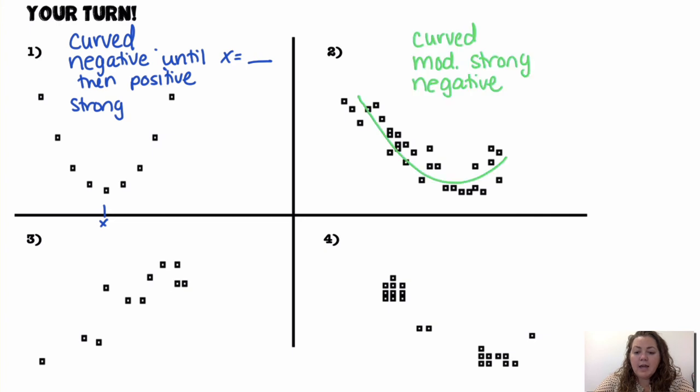Number two. Again, that one looks kind of curved to me. Moderately strong. And, kind of, more on the negative side. Again, it is kind of ending positive. So, you could say, again, like you said for the first one, negative until and then positive.